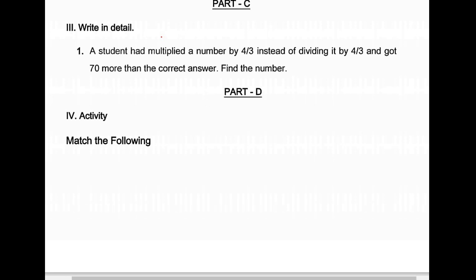First, you can answer the question easily and you will get 70% of the answer. Here is the problem: A student has multiplied a number by 4/3 instead of dividing it by 4/3, and got 70 more than the correct answer. Find the number.